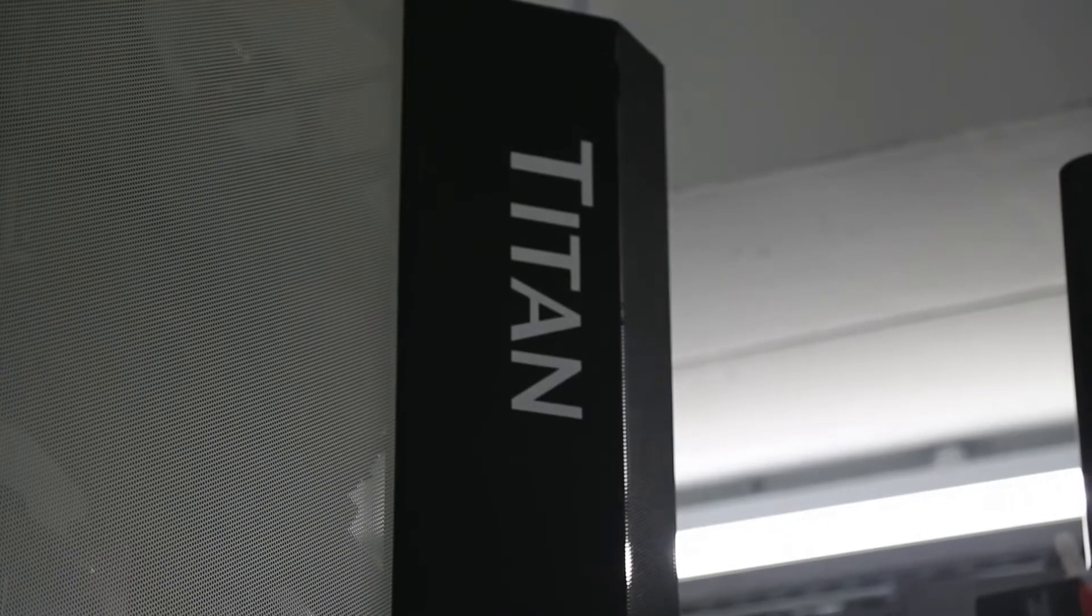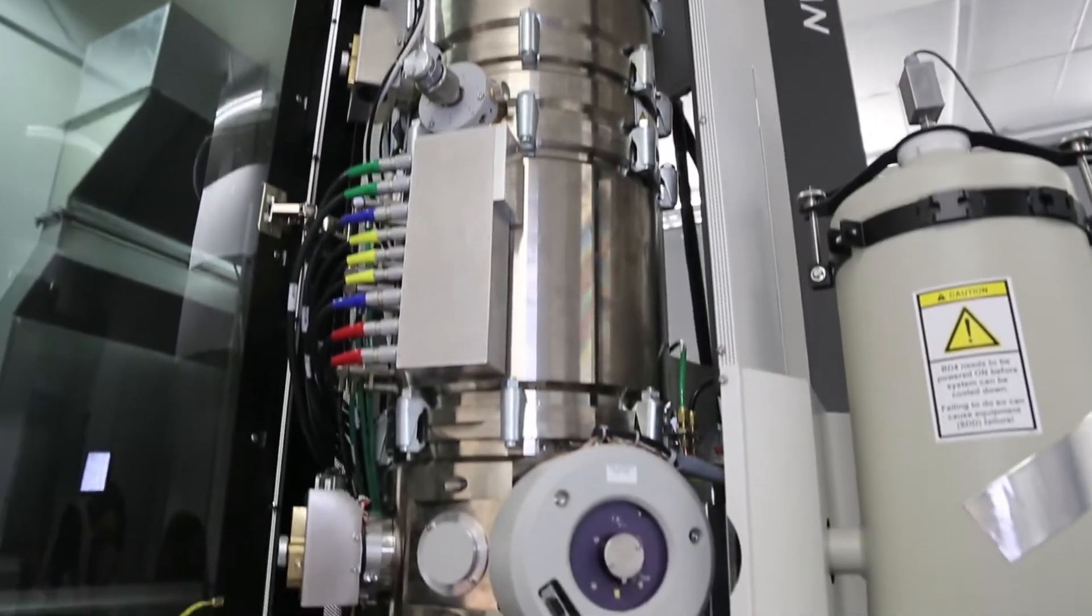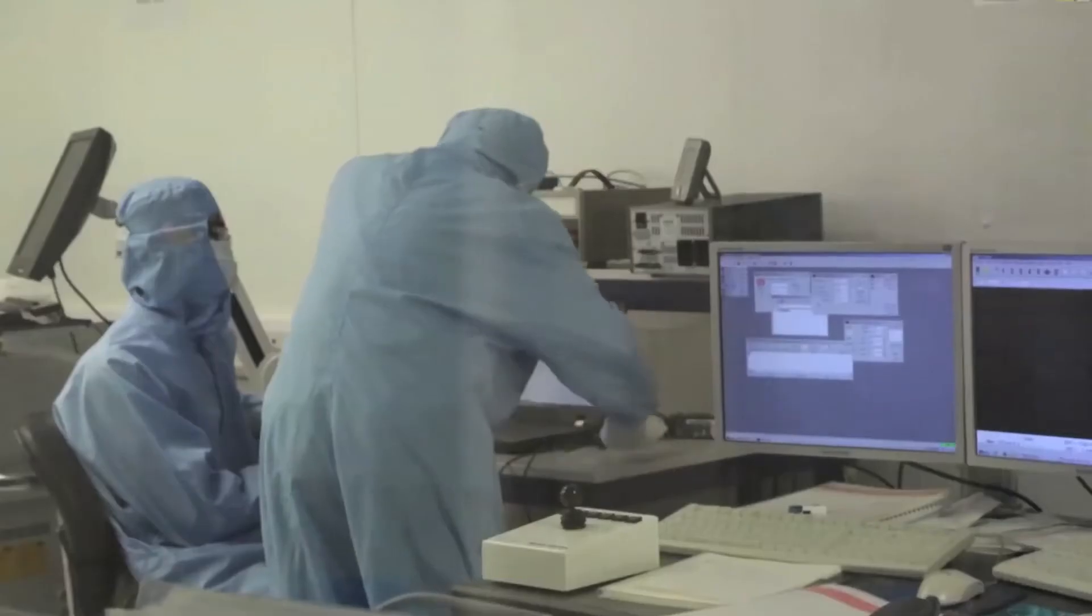One of the things that really helped us to understand that you really did have graphene was the types of very exciting new microscopes that are now available. And it was the availability of these microscopes that really helped them understand that what they actually had was a single atomic layer.